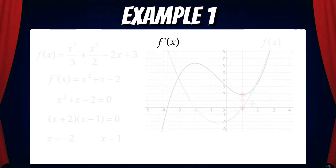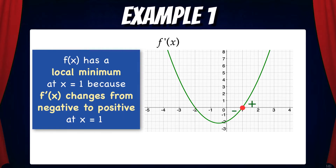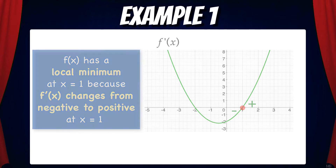Now we can make conclusion statements. f has a local maximum at x equals negative 2, because f' changes from positive to negative at x equals negative 2. And f has a local minimum at x equals 1 because f' changes from negative to positive at x equals 1.